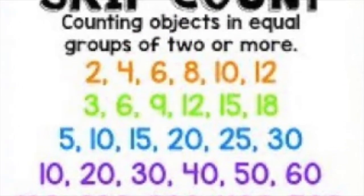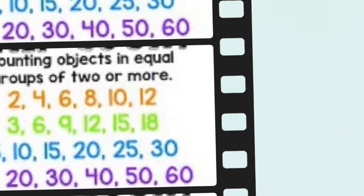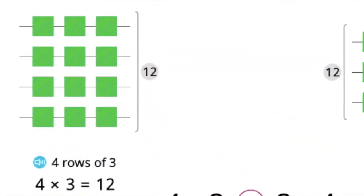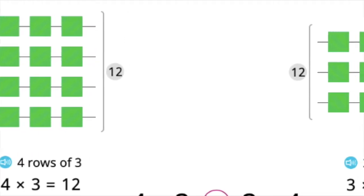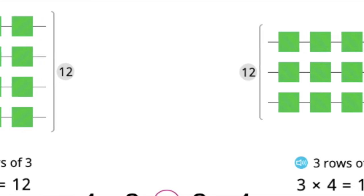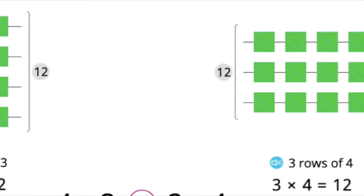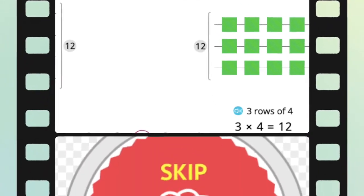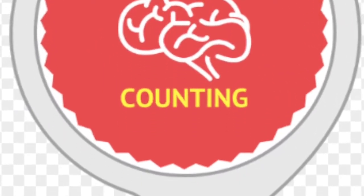When I count by a number, I'm finding multiples. When facing a problem, decide on a number. Then count it as many times as the other. You can choose the order you want. Skip counting.